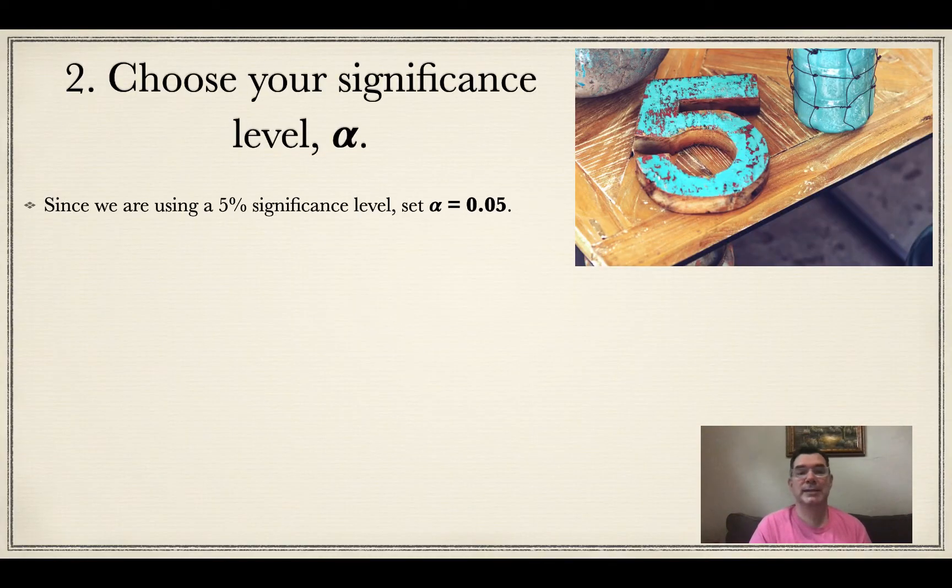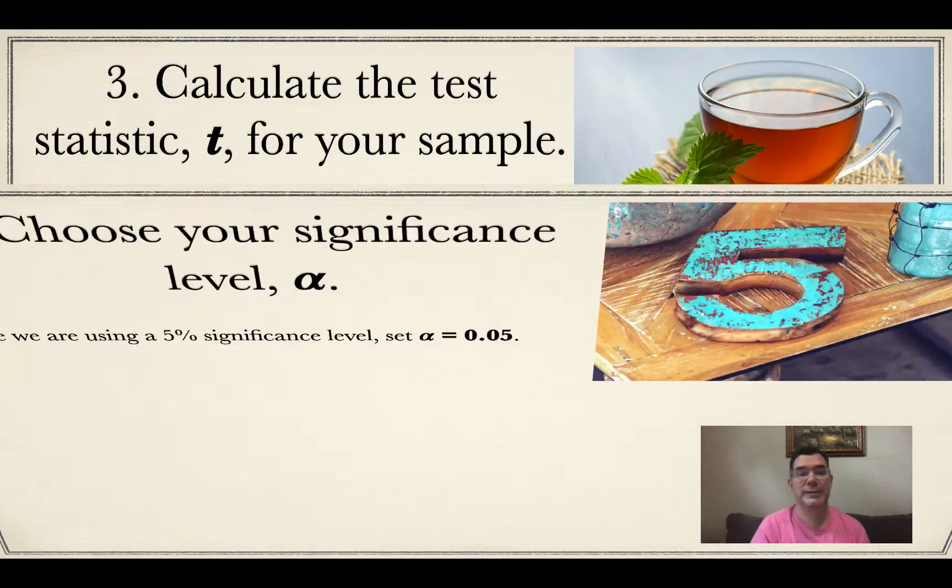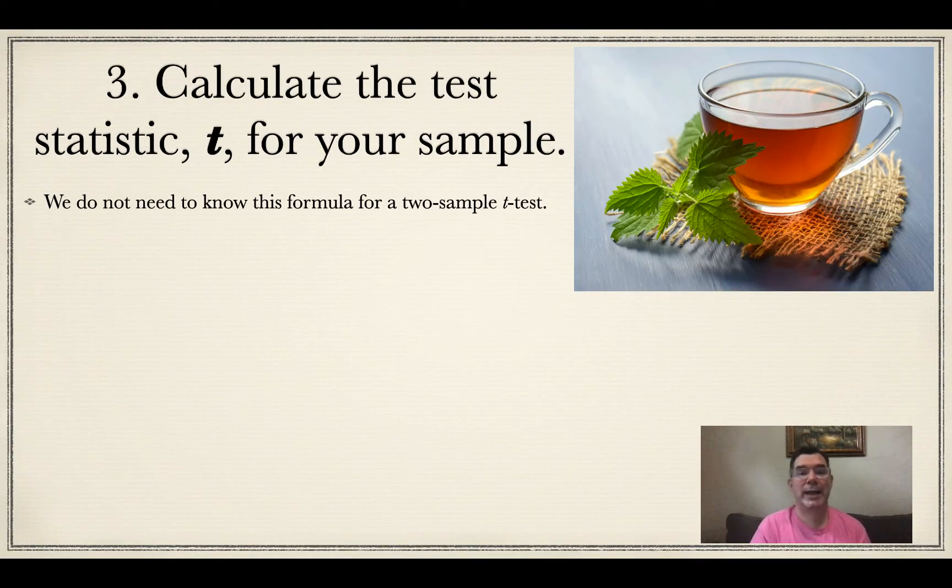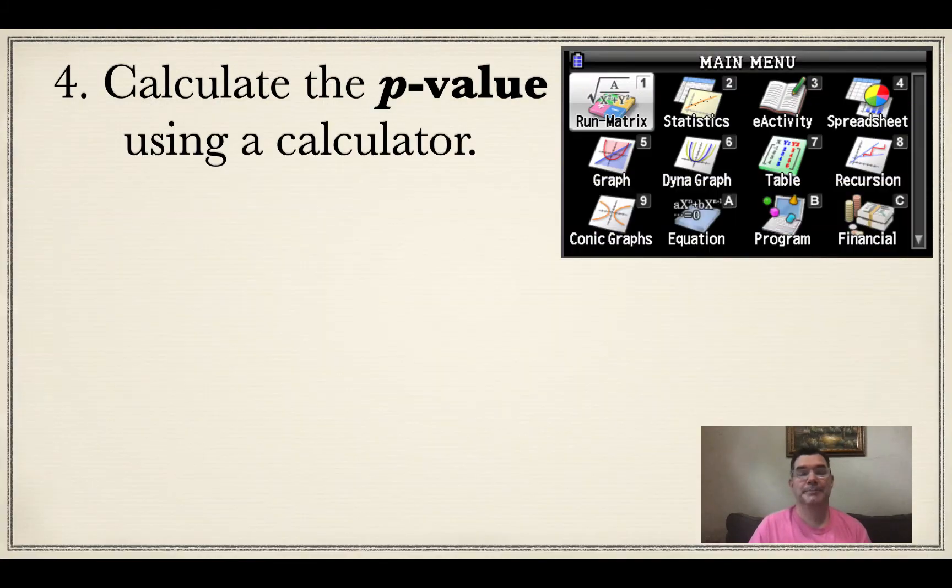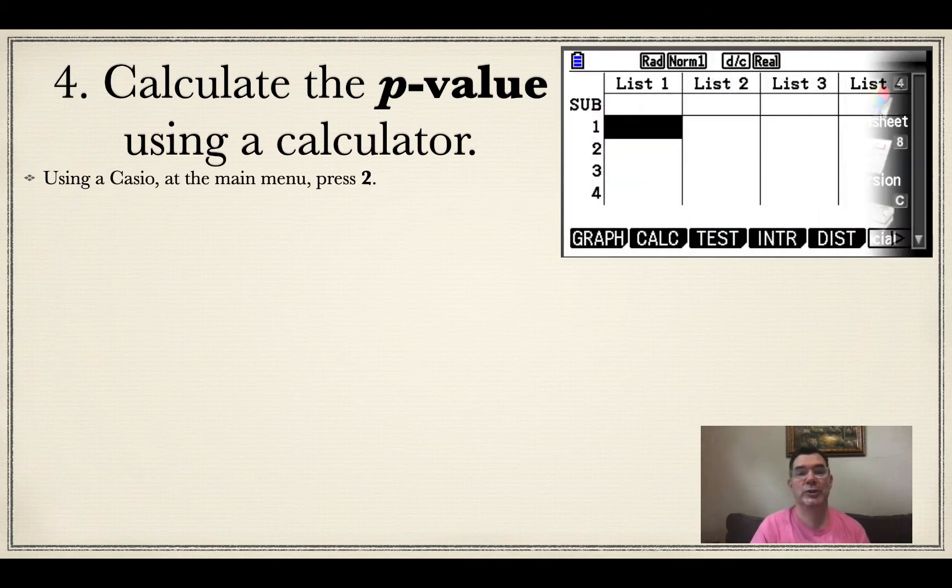Alright, so our significance level, as usual, is 5%. So alpha is going to be the decimal equivalent of that, which is 0.05. So now I calculate my test statistic t. I really don't need to do this simply because I know now that my calculator calculates it for me. So I allow that to happen. I'm also going to let my calculator calculate the p-value by putting in the information. So here's how I do that.